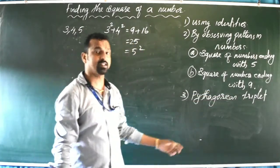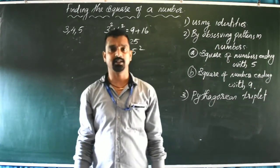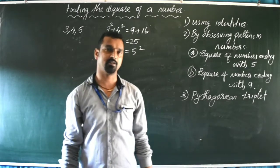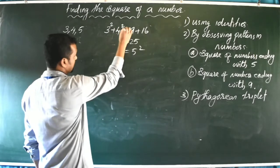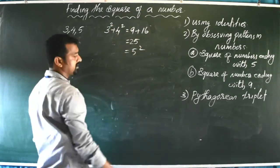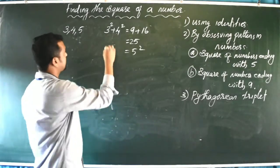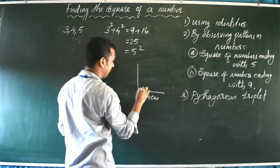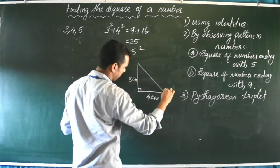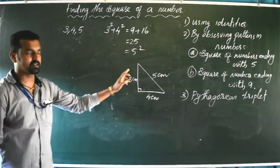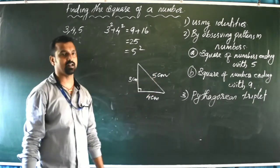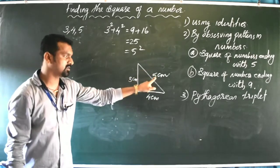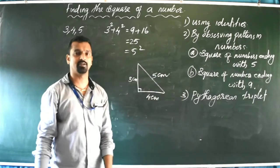Pythagorean triplet means a set of three numbers. Pythagoras was a Greek mathematician who discovered that the sides of a right-angled triangle always satisfy this property: the sum of the squares of the two shorter sides equals the square of the hypotenuse. So 3, 4, 5 are the sides of a right-angled triangle — a triangle with sides 3 cm, 4 cm, and 5 cm (hypotenuse) with a 90° angle.